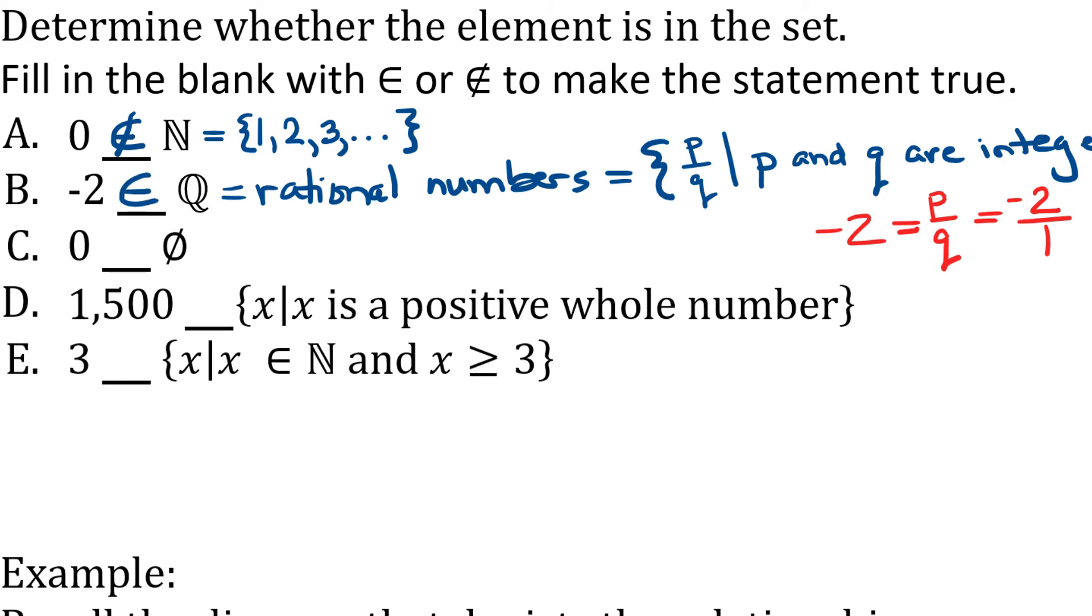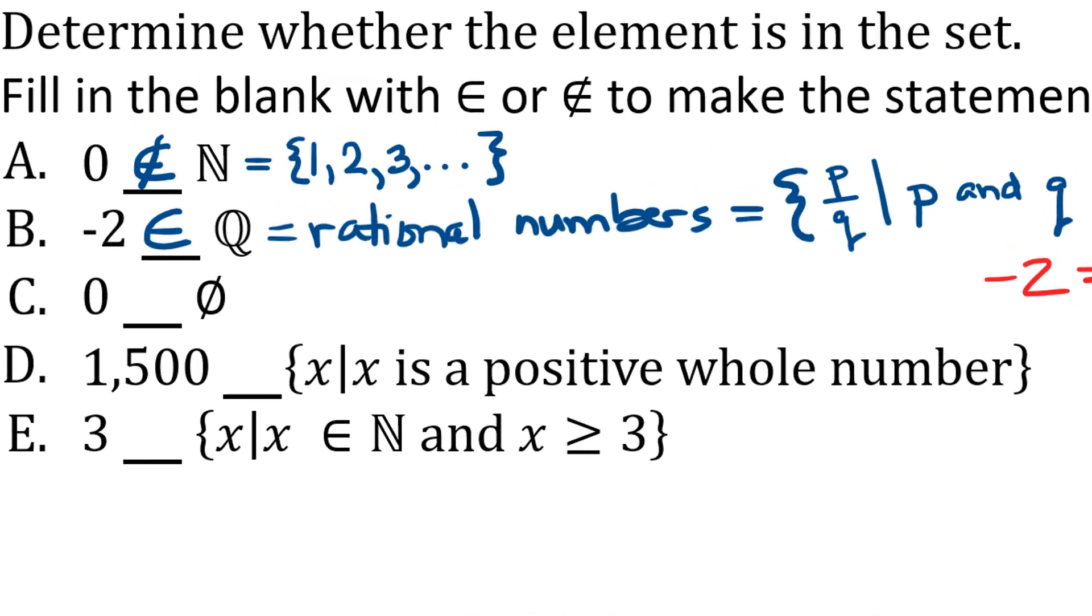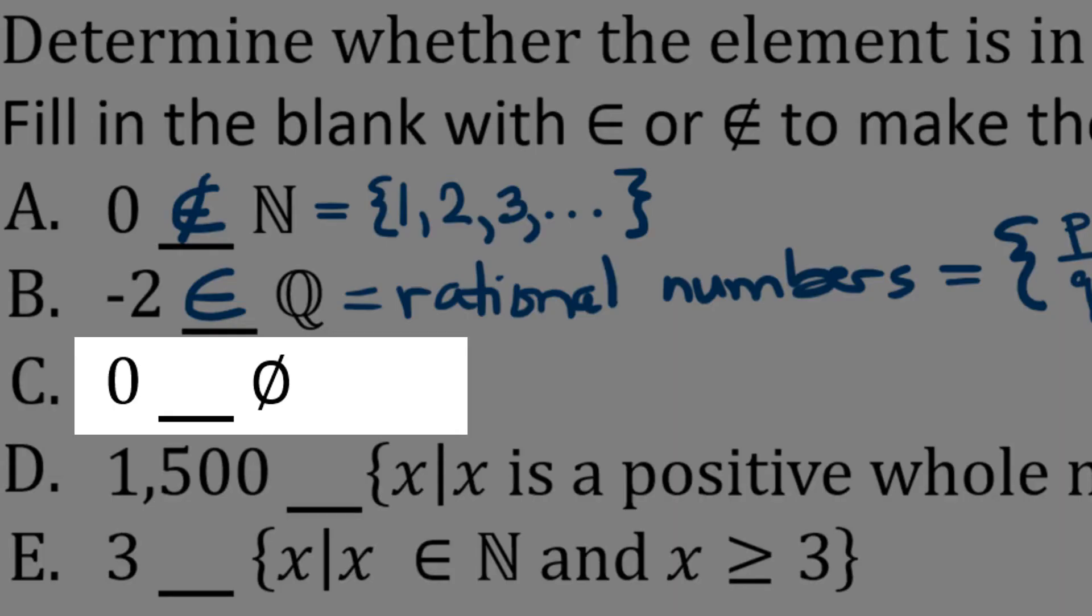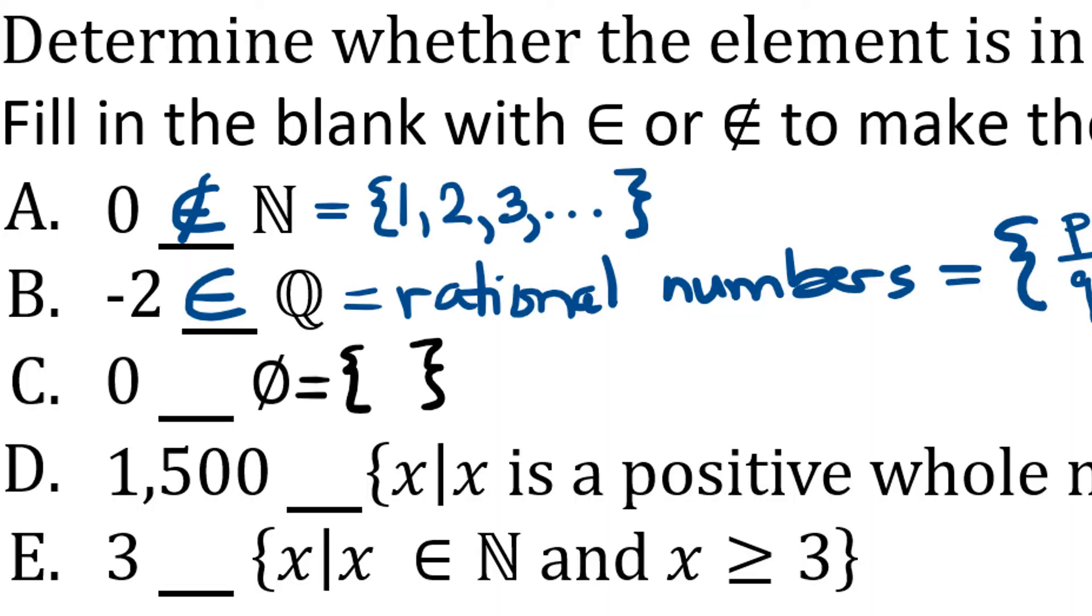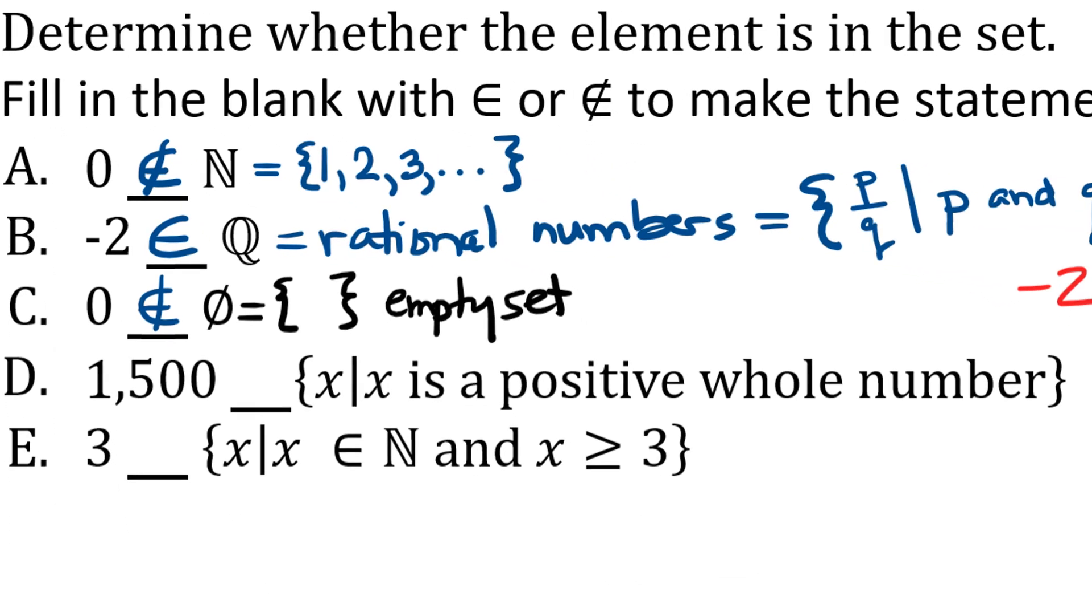Now let's look at part C. In part C, we have 0 and the empty set. I know that looks a little bit like a 0, but it's supposed to be the empty set. This symbol can also be written as just the braces without anything in them because it represents the empty set. So is 0 an element of the empty set? The answer is no because nothing is an element of the empty set. There's nothing in the empty set. So 0 is not an element of the empty set.